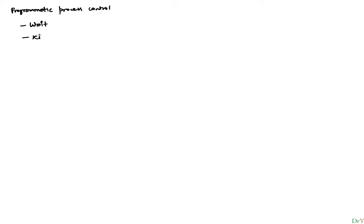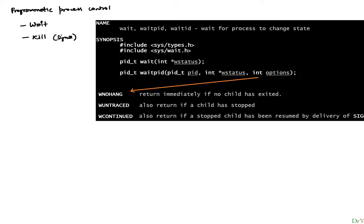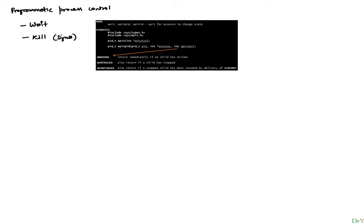Programmatic process control is really about two things: 'wait', which responds to a child's exit, and 'kill', which sends a signal. Kill is also a system call. Let's look at how these two work. Here is how wait works, and here is how signal works. Let's talk about wait first.